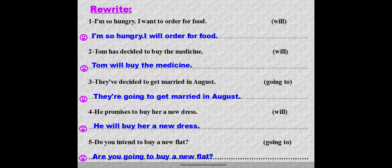Number three: 'They have decided to get married in August.' Use 'going to' — it's a plan: 'They are going to get married in August.' Number four: 'He promises to buy her a new dress.' Use 'will' — it's a promise: 'He will buy her a new dress.' Number five: 'Do you intend to buy a new flat?' Use 'going to': 'Are you going to buy a new flat?'